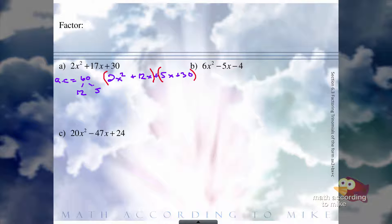From the first group we can pull out a 2x. If we pulled out a 2x, we'd be left with x plus 6. And then from the second group we can pull out a 5, and we're left with again x plus 6. And they both have an x plus 6. So let's take out the x plus 6, and we're left with 2x plus 5.